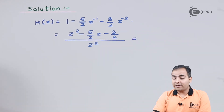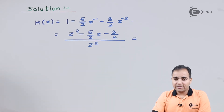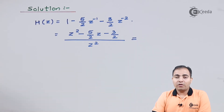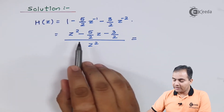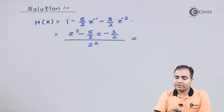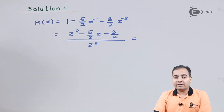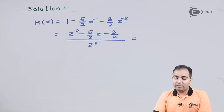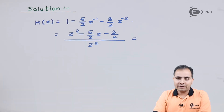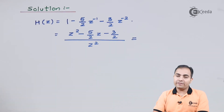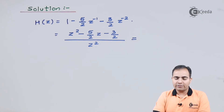Now we will find the factors of the numerator. This is important because the numerator always contains the zeros of the system. From the factorization we will get the location of the zeros, and this location will tell us whether the system is minimum phase, maximum phase, or mixed phase.